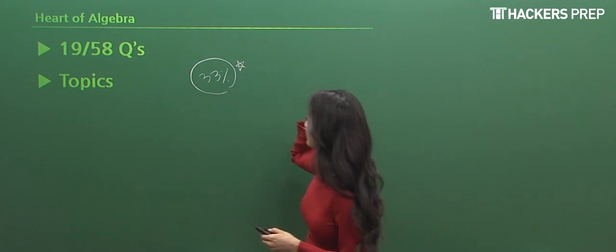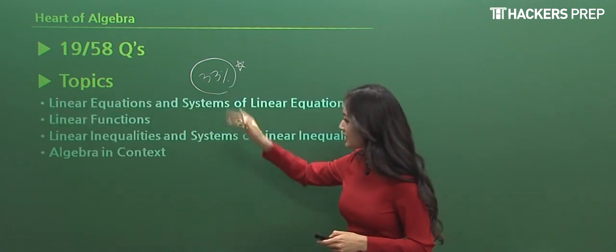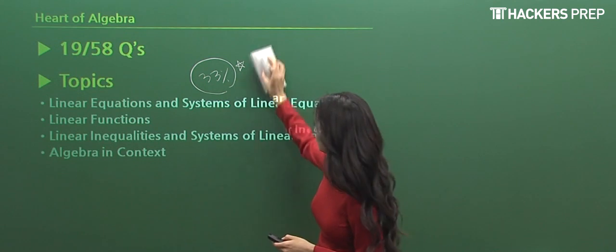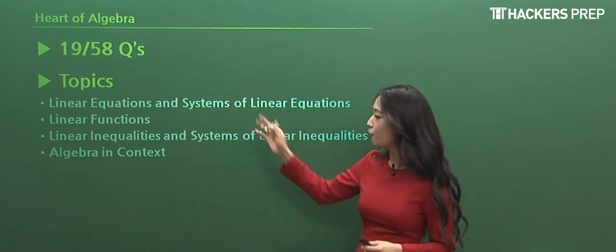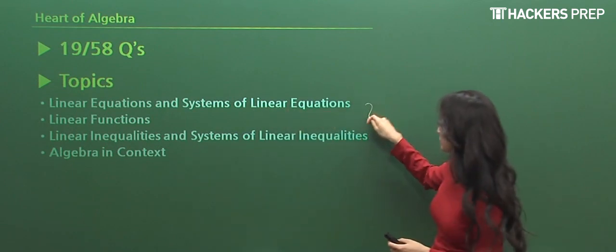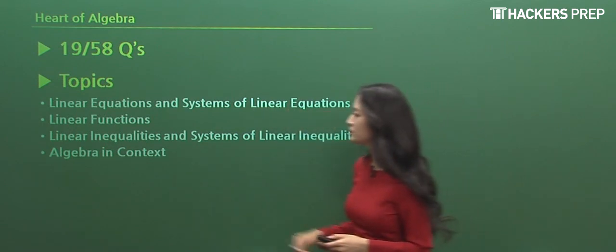So we can see that it is a very important topic. And I broke it down for you, and you can see this in your book as well. Under the Heart of Algebra, there are four main topics. These three are the important ones. When we look at the first one, it says Linear Equations and Systems of Linear Equations.